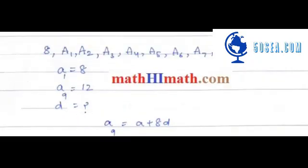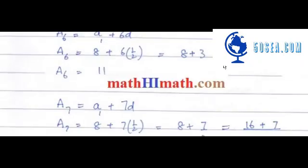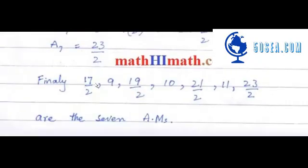So between 8 and 12 we have 7 A.M.s inserted: 17/2, 9, 19/2, 10, 21/2, 11, and 23/2.